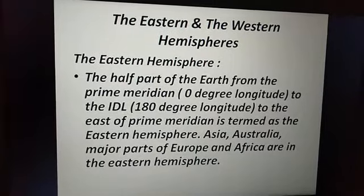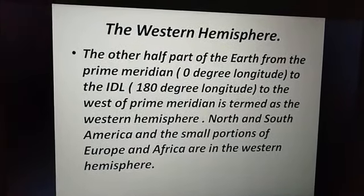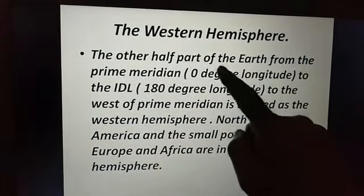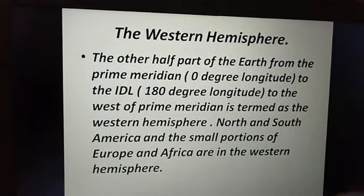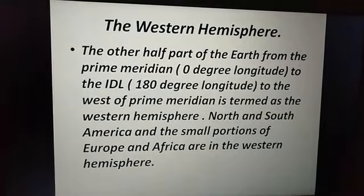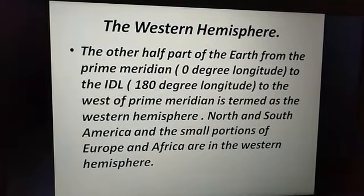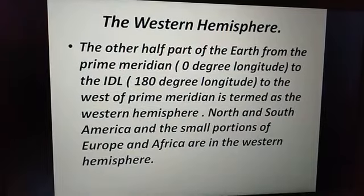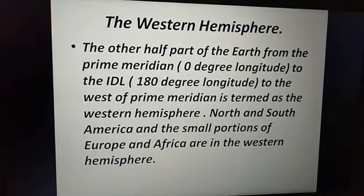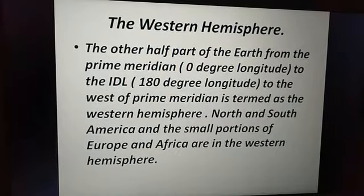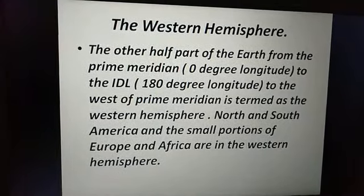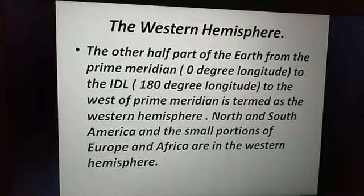The western hemisphere is the opposite — the other half of the earth. Starting from 0 degrees and moving west (anti-clockwise) up to 180 degrees covers the western hemisphere. Continents in the western hemisphere include North and South America, and small portions of Europe and Africa.